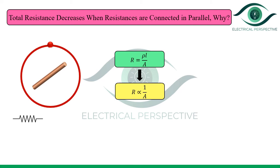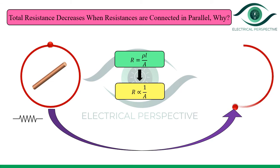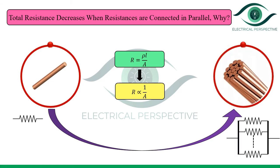Now instead of a single conductor, let us assume that a few conductors are connected in parallel. When a few conductors are connected in parallel, you can see in the figure that the effective cross-sectional area of the conductor increases.